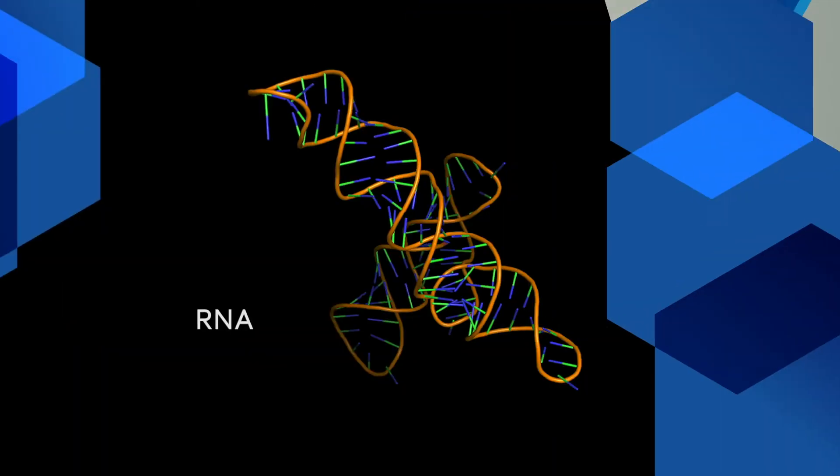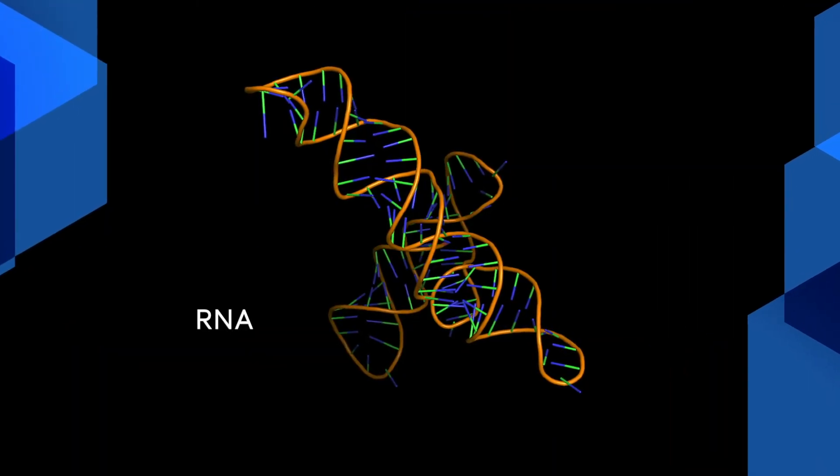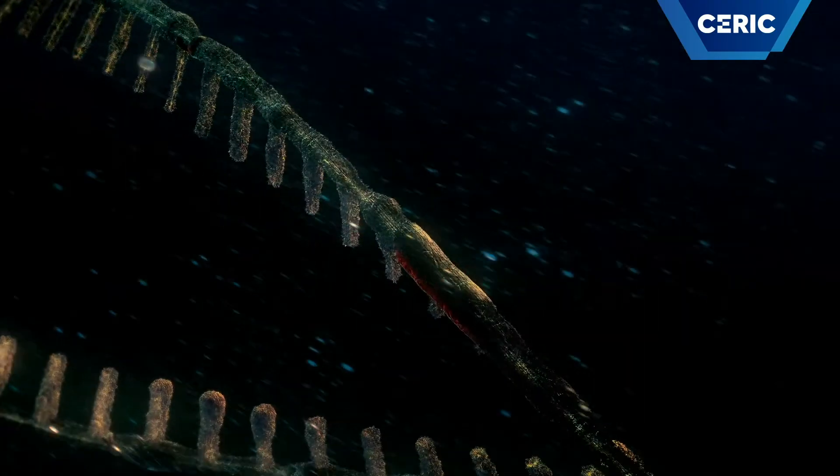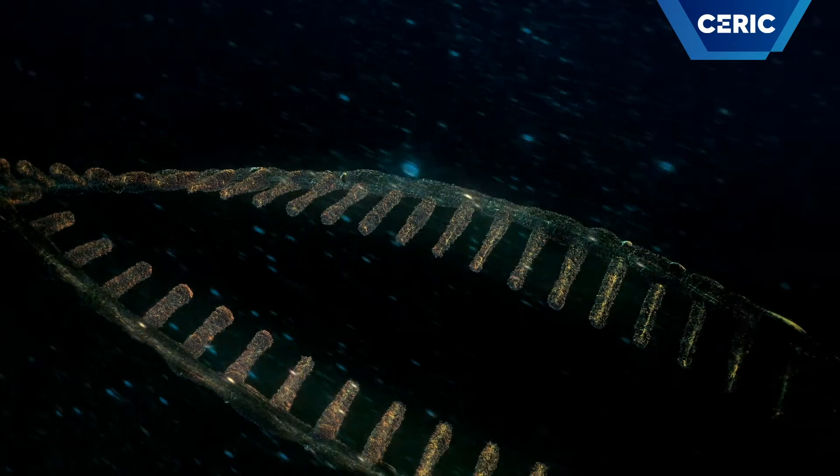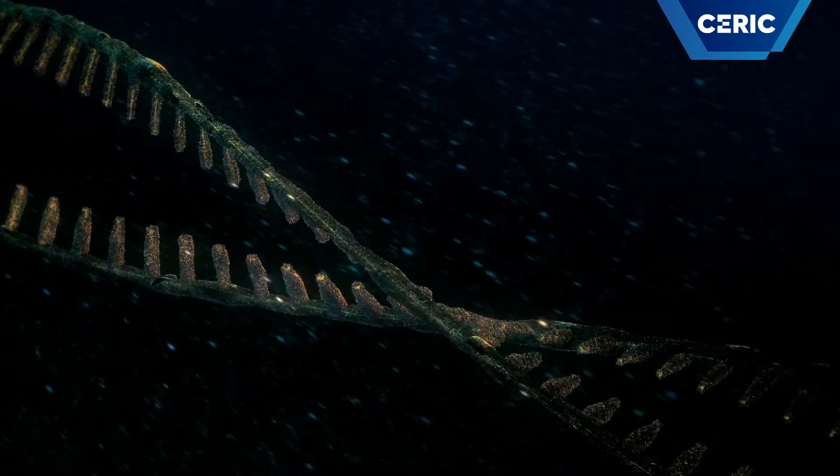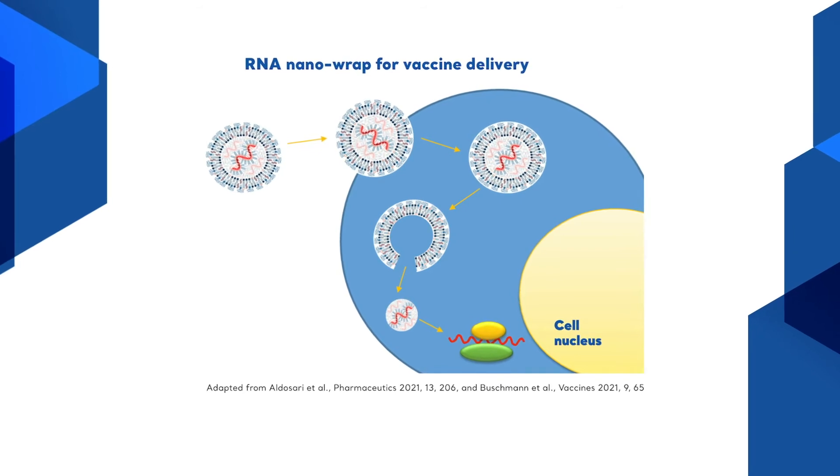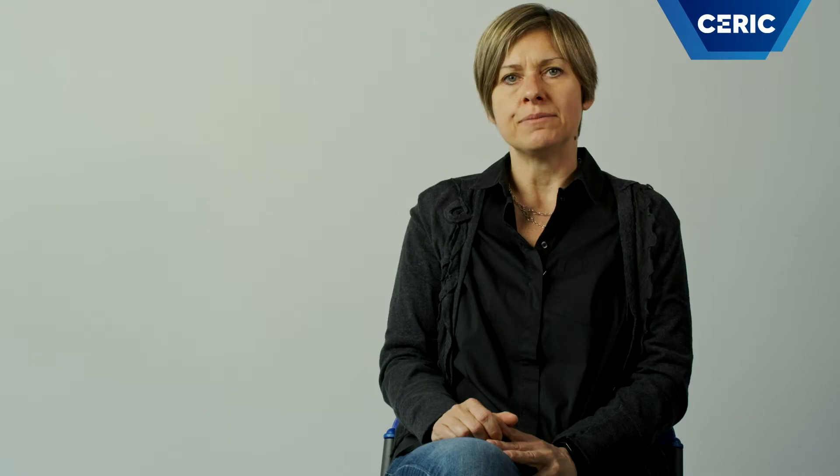Small angle scattering is important, for example, to investigate the packaging of RNA used in the COVID vaccines. RNA is very sensitive and once injected needs to be protected until its uptake by the cell. This RNA nanowrap is made of cell membrane constituents optimized for the uptake and delivery of RNA to the cell.